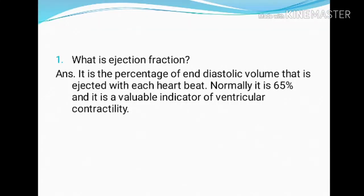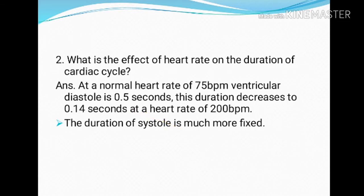Important points to remember: What is ejection fraction? It is the percentage of end diastolic volume that is ejected with each heartbeat. Normally it is 65% and it is a valuable indicator of ventricular contractility. Regarding the effect of heart rate on cardiac cycle duration: at a normal heart rate of about 75 beats per minute, ventricular diastole is 0.5 seconds. This duration decreases to 0.14 seconds at a heart rate of about 200 beats per minute. The duration of systole is much more fixed.